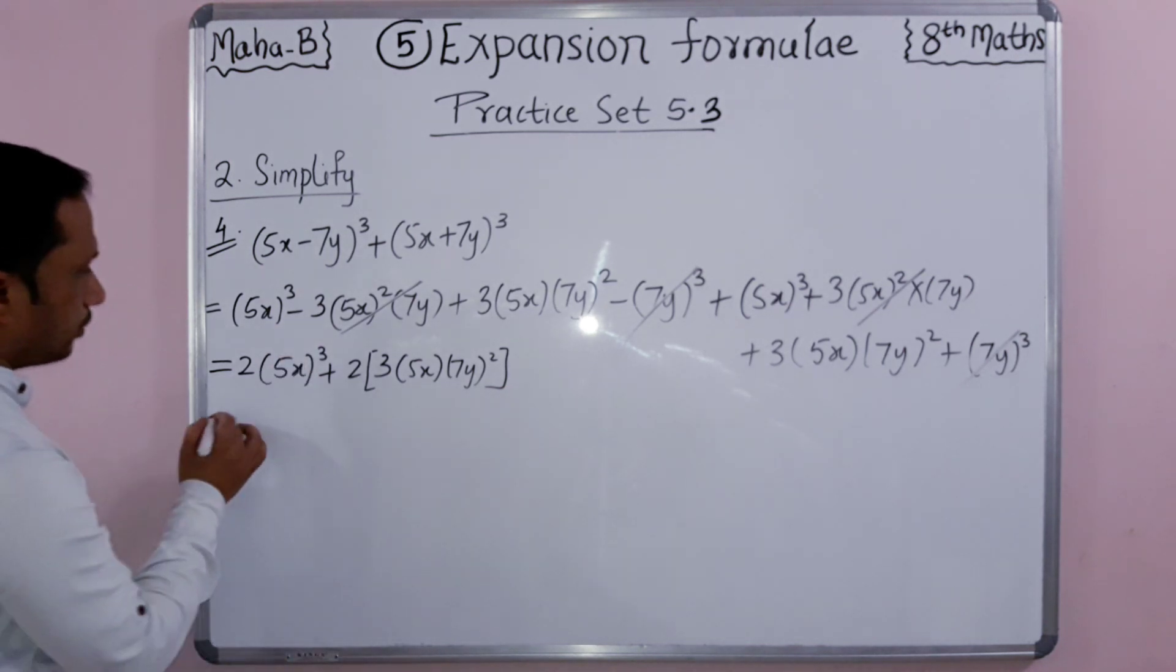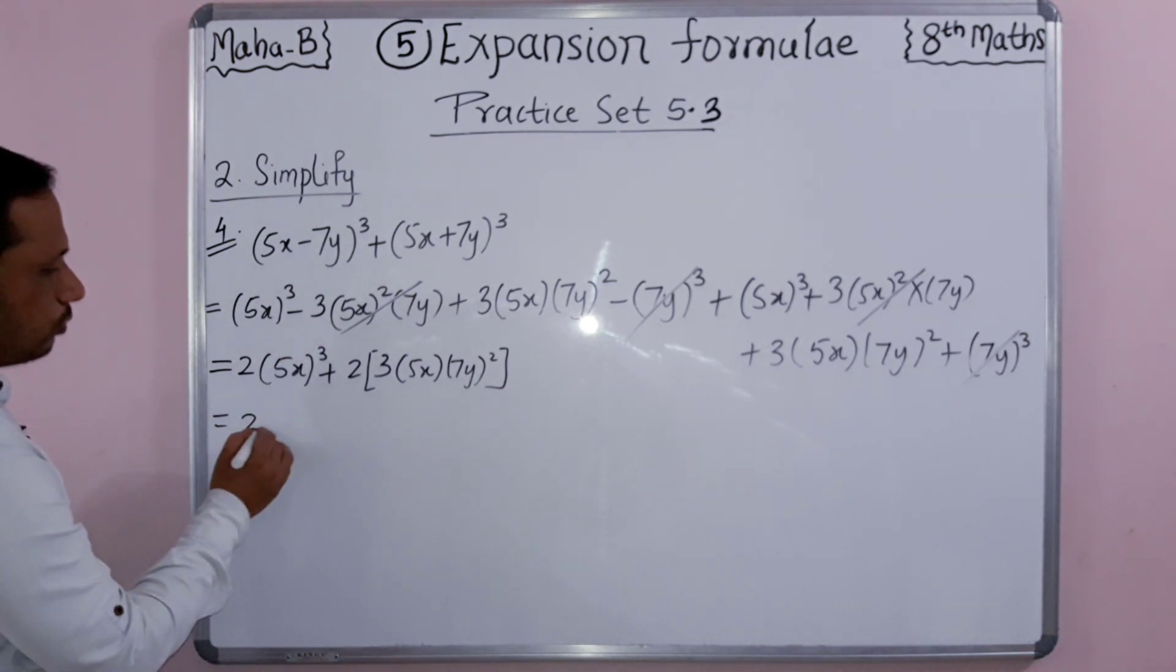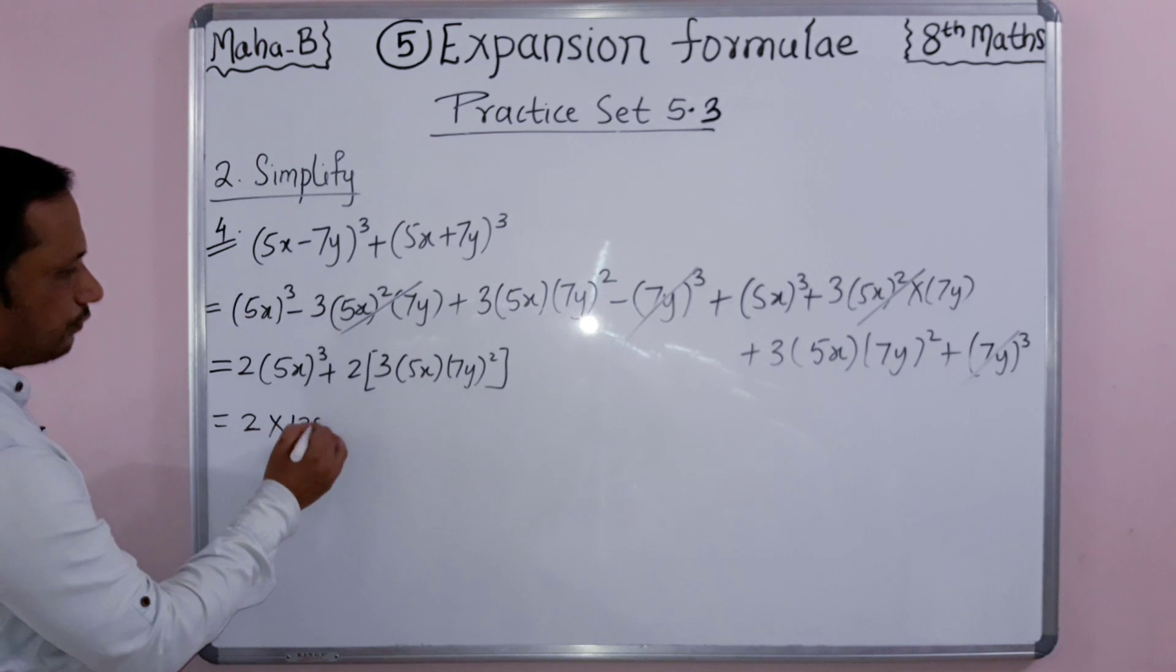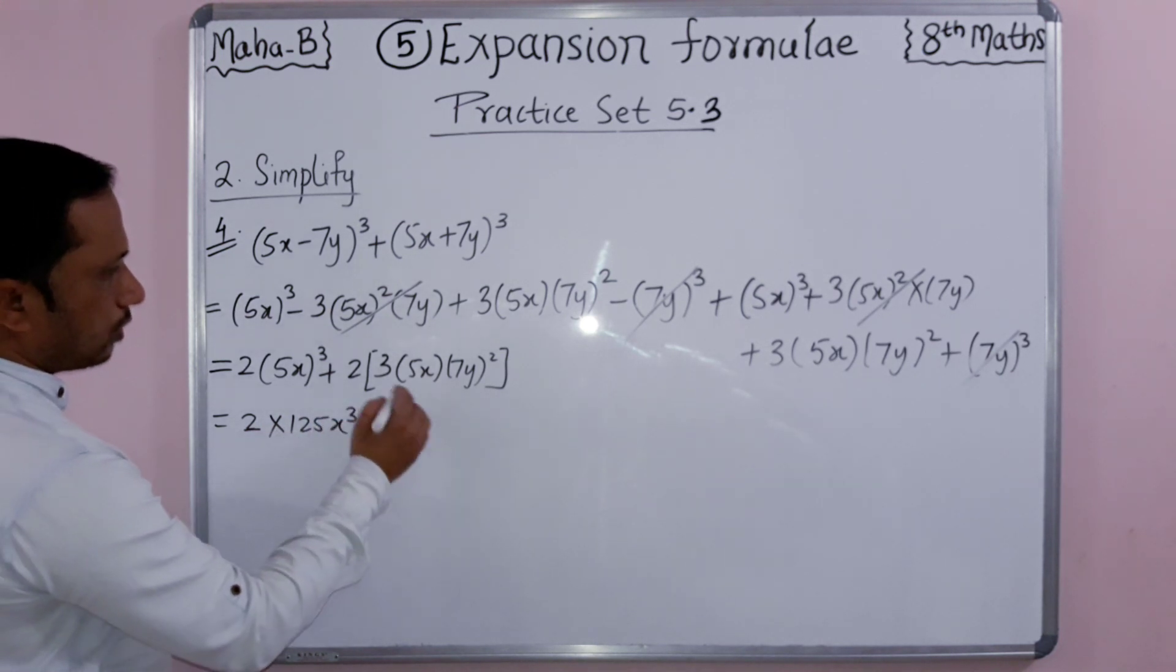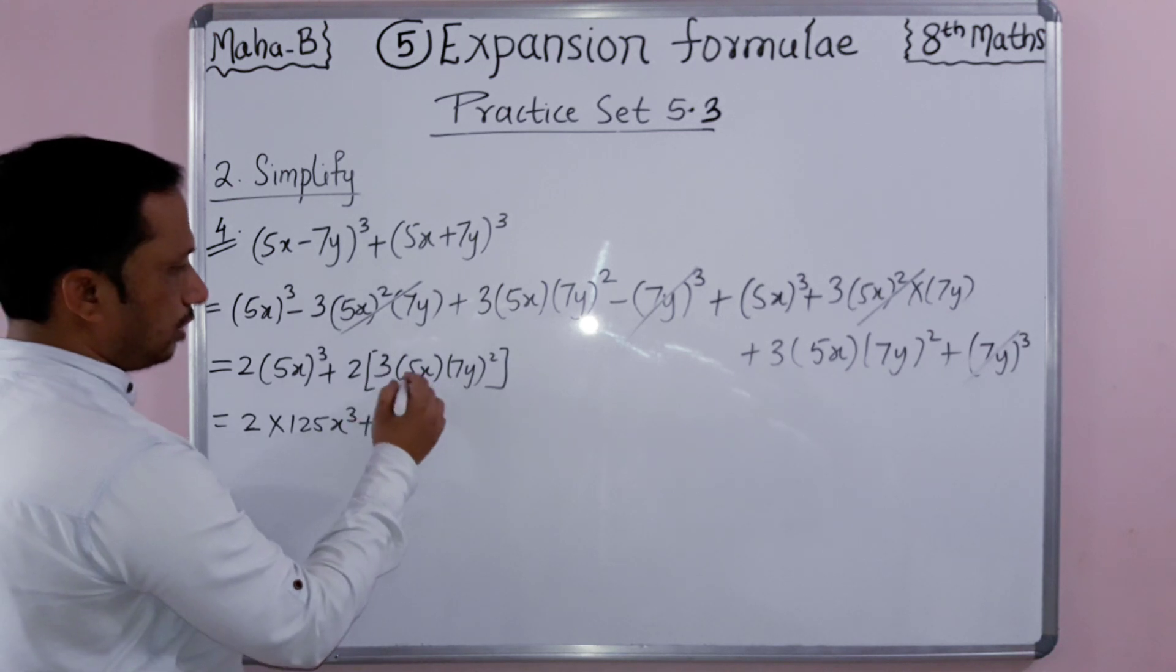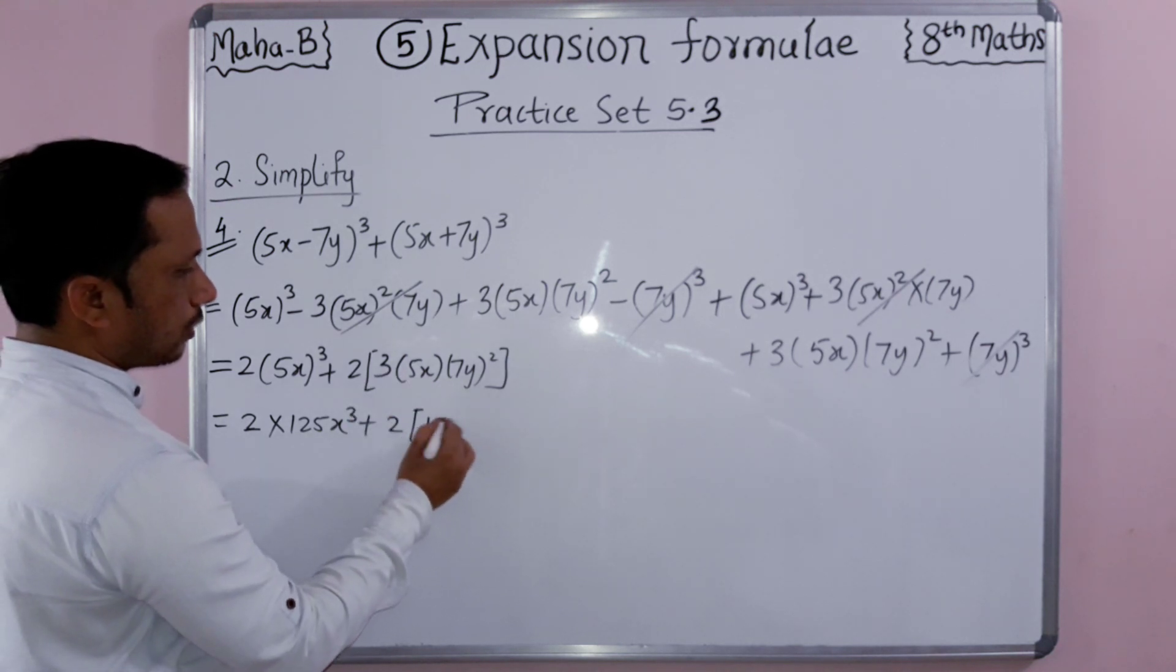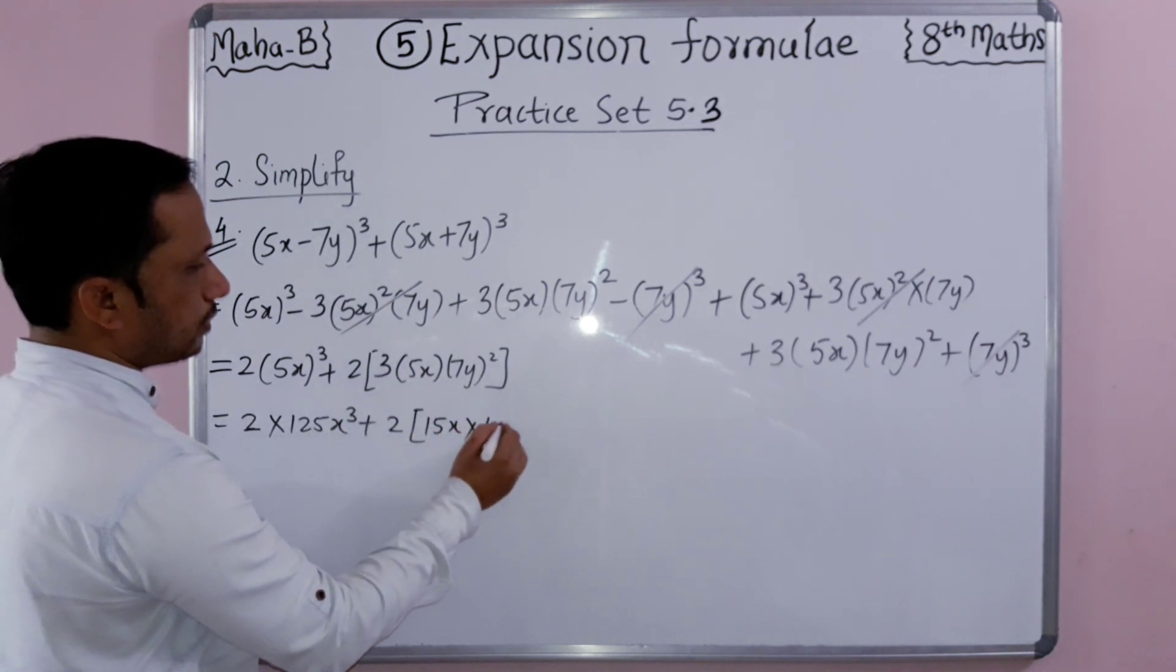Students, so now solve this one. Two into what? The cube of 5 is 125x³, plus two. So now two times, two times 50x into seven squared is 49 and y² is y².